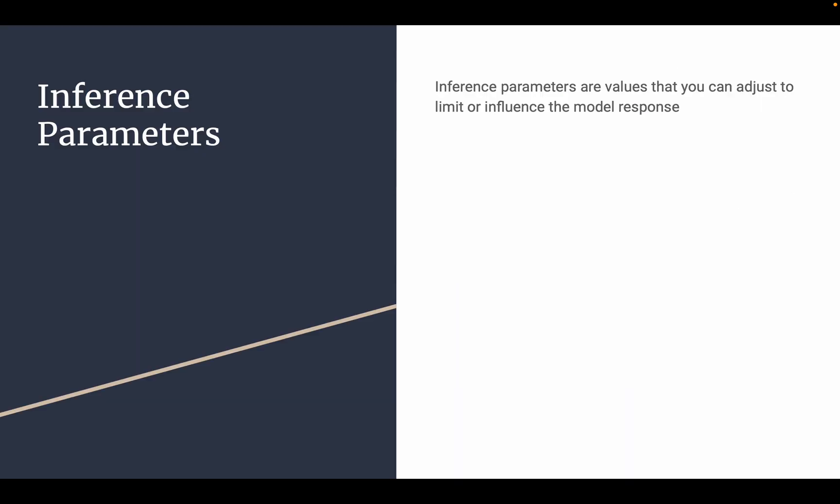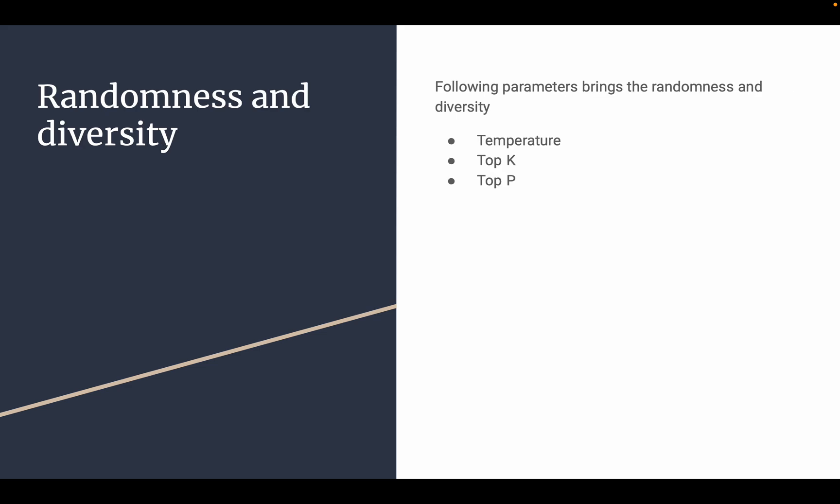Inference parameters are values that you can adjust to limit or influence the model response. This will help us to control the response from an LLM. There are two types of inference parameters we are going to discuss: one is randomness and diversity. The parameters that bring randomness and diversity to the LLM model are mainly three: temperature, top K, and top P.